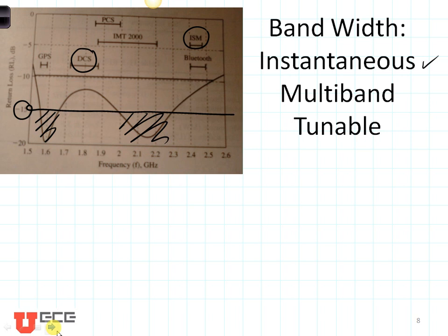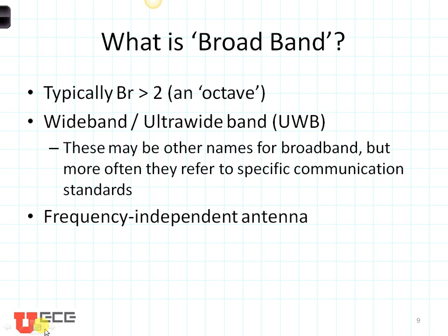What is a broadband antenna? If an antenna has a ratio bandwidth greater than two — that's an octave of bandwidth — we would say that antenna is typically broadband. Other names that we use are wideband or ultrawideband, and those may be synonymous with broadband, although sometimes they are names for specific communication standards.